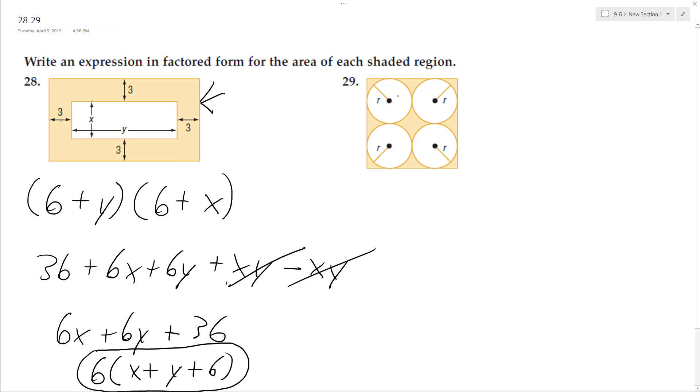Okay, for problem 29 here, the radius of the circles is r, so that's 2r across. And then r, r, that's 4r, so 4r by 4r for the square.